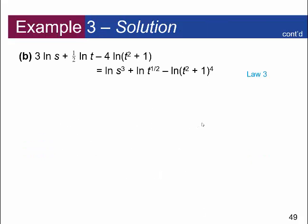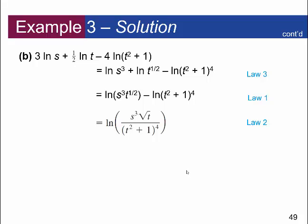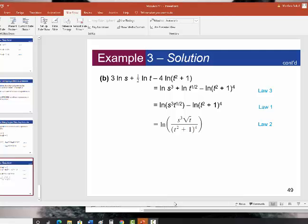Let's try a more complex example: 3 natural log of s plus one-half natural log of t minus 4 times the natural log of t squared plus 1. First bring all coefficients up as exponents. Then work left to right — combine the addition as multiplication to get natural log of s cubed t to the one-half. Then use the subtraction to undo it as division, giving the final answer. I hope that helped as a quick introduction to exponentials and logs.